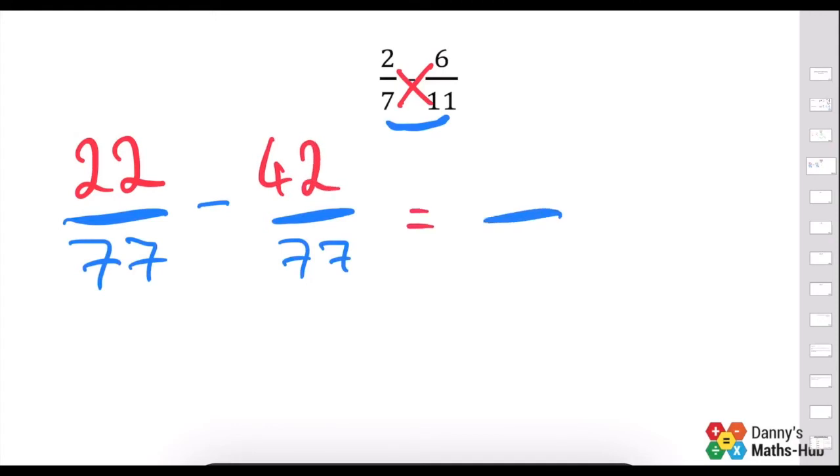Now, our denominator always stays the same. And this time we're going to have a negative number, which is perfectly fine. We're going to have minus 20. This can't be simplified, so this is our final answer: minus 20 over 77.